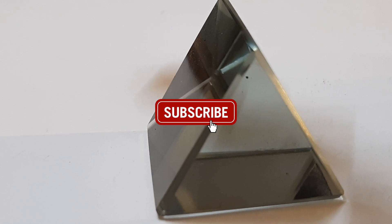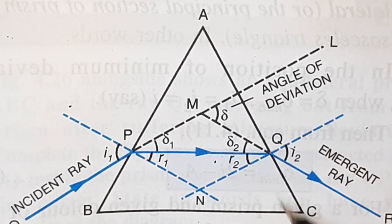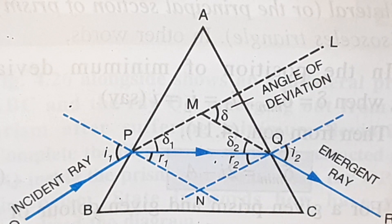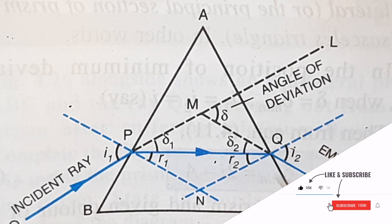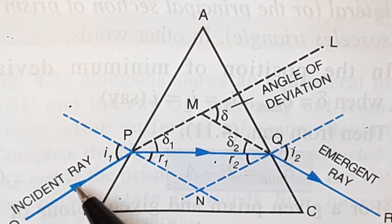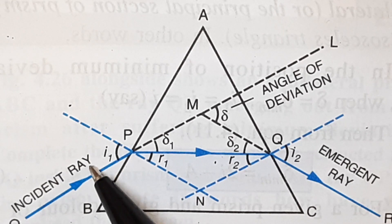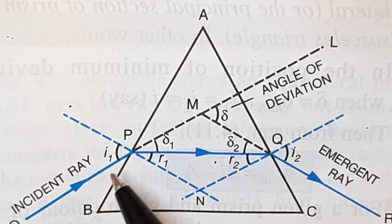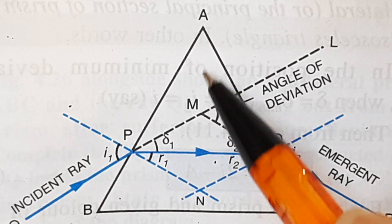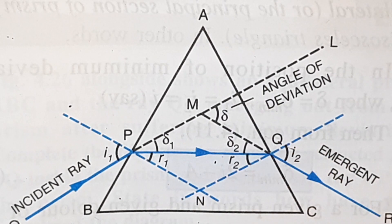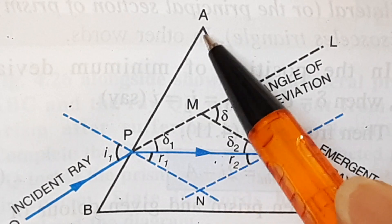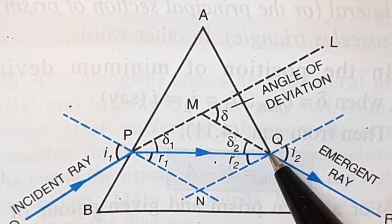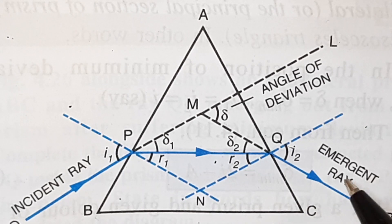Looking at the ray diagram: this is the outline of the prism, this is the first refracting surface, this is the second refracting surface, and angle A is the angle of the prism. The incident ray travels from the rarer medium into the denser medium, so it bends towards the normal at the first surface. The ray then travels through the body of the prism and strikes the second surface, which separates the denser medium from the rarer medium.